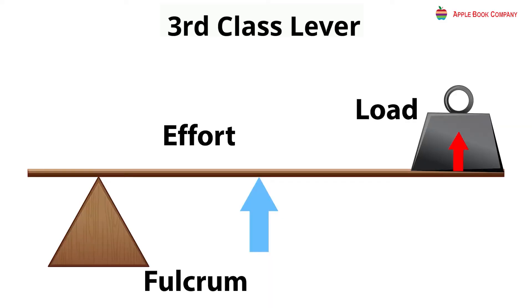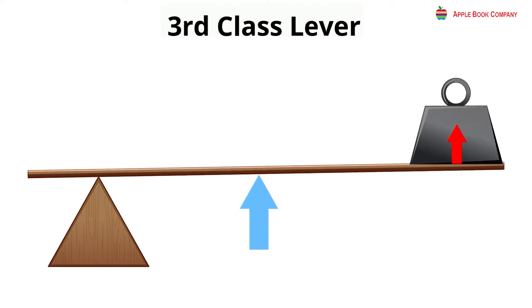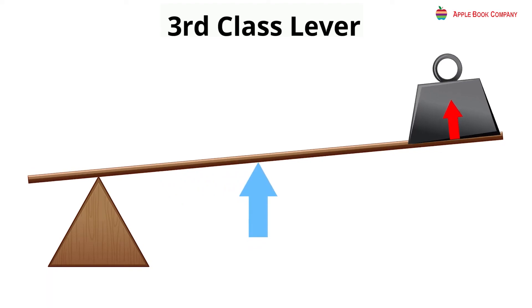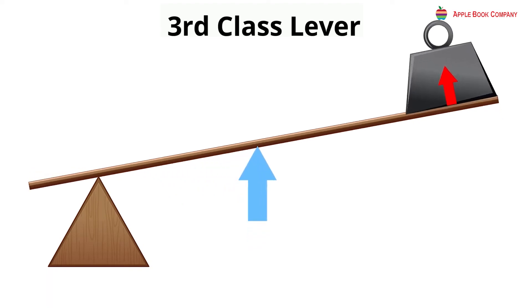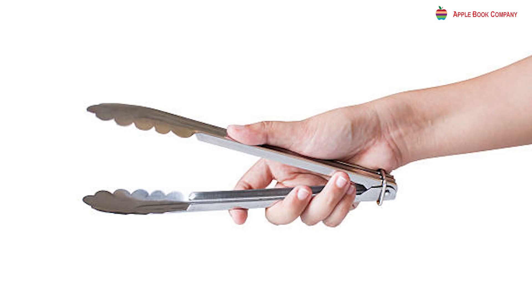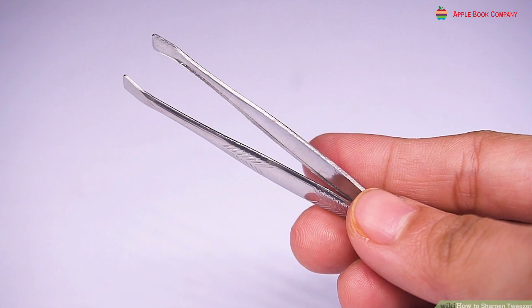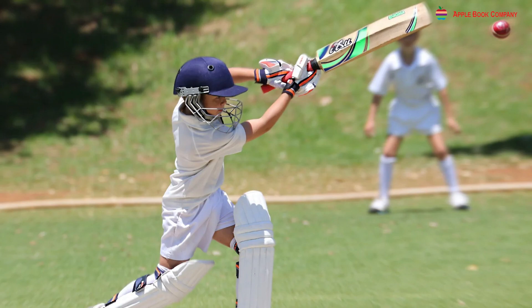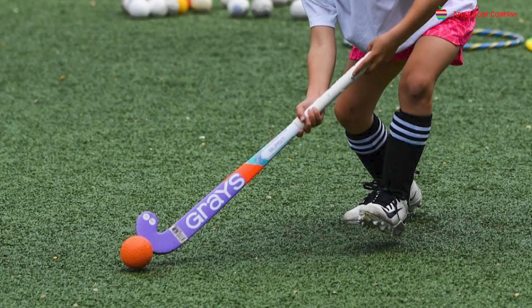Third class lever: when the effort is in the middle and the load and fulcrum are at the two ends, it is called a third class lever. A broom, a pair of tongs, a tweezer, and using a cricket bat or hockey stick to hit a ball are examples of third class levers.